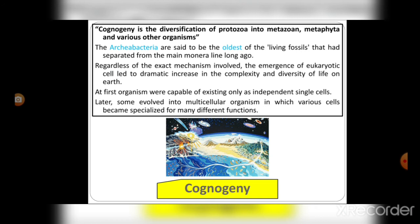Regardless of the exact mechanism involved, the emergence of eukaryotic cells led to a dramatic increase in the complexity and diversity of life on Earth. At first, organisms were capable of existing only as independent single cells. Later, some evolved into multicellular organisms in which various cells became specialized for many different functions.